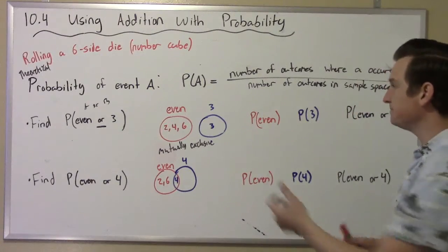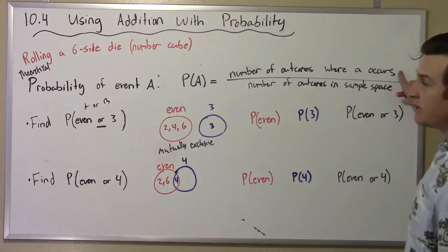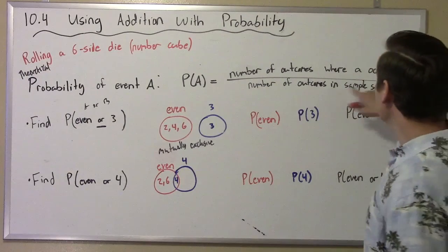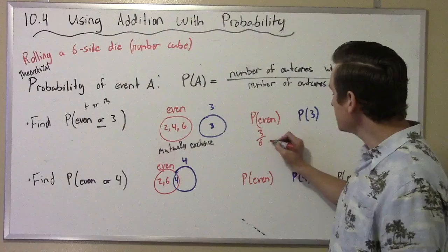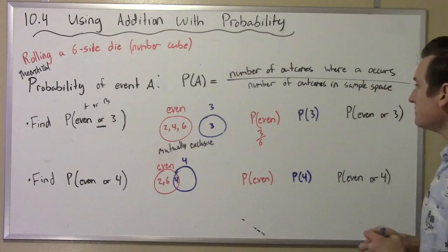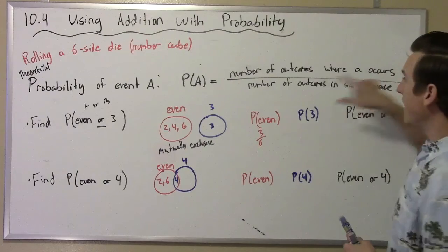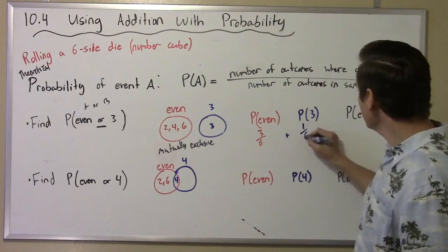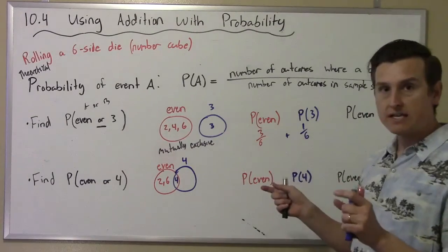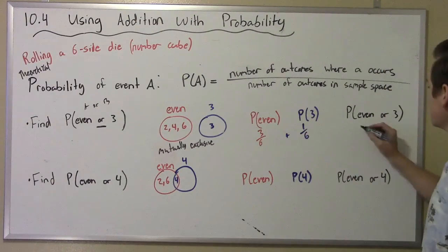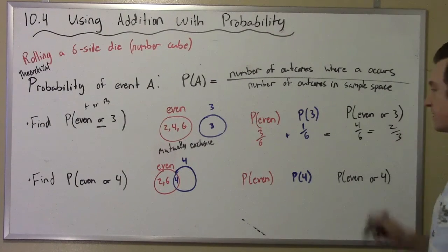Let's look at the probability of each separately. The probability of getting an even — there are three ways to get an even, so P(even) is 3 over 6, since there are six possible outcomes when rolling a die. The probability of getting a 3: there's only one way to get a 3, so that's 1 over 6. So the probability of getting an even number or a 3 is four ways out of six possible, which is 3/6 plus 1/6 equals 4/6, or 2/3 when simplified.